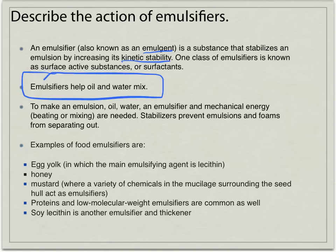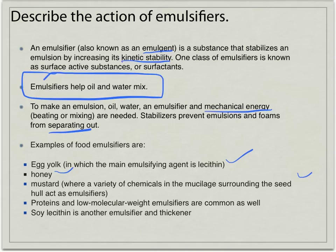Emulsifiers mainly help oil and water stay mixed. You can mechanically mix them by beating or mixing, and the emulsifier will help keep them mixed and prevent them from separating out. Good emulsifiers include egg yolks, honey, mustard, protein, soy, and lecithin. Interestingly, soap is actually an emulsifier, because soap has a polar end and a non-polar end. Soap can help the polarity of water clean off the non-polar oils and fats that might be on your plates and dishes.